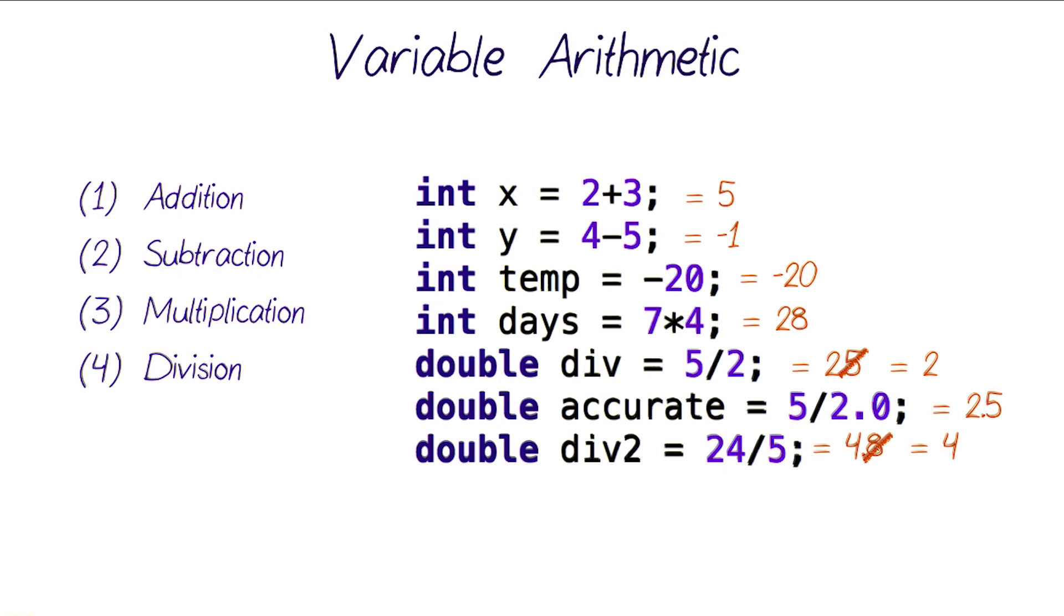So, if you want the actual division of 24 divided by 5, then just make sure that at least one of those two numbers is a double, like 5.0, and that would store the value 4.8 into our variable accurate 2 here. We will talk a little bit more about this when we get to casting very soon.